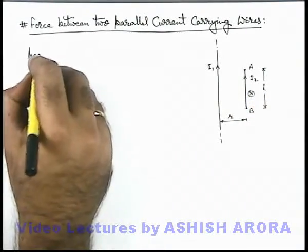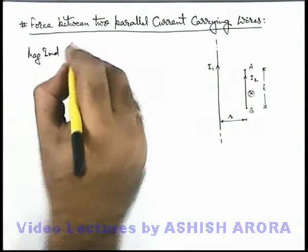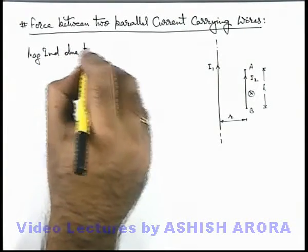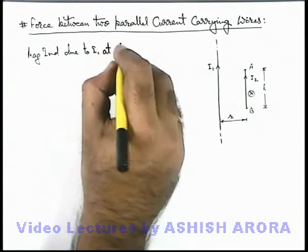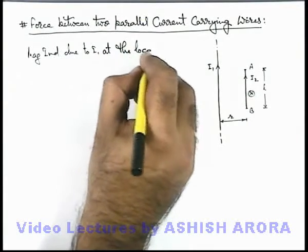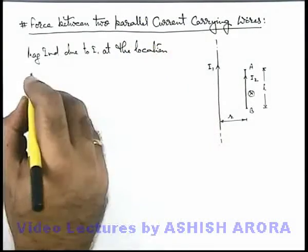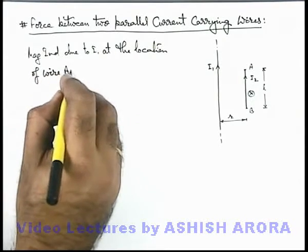And here we can write magnetic induction due to i₁ at the location of wire AB.